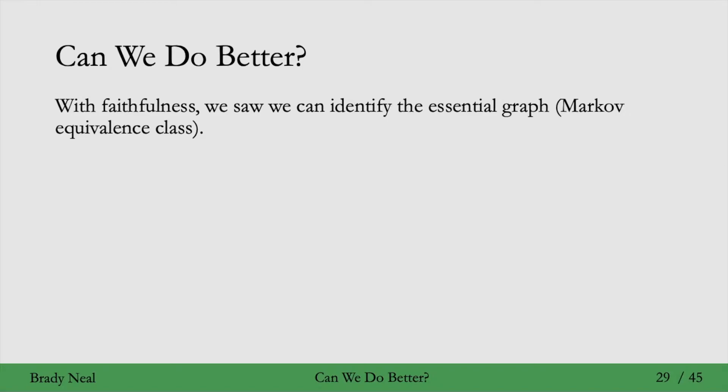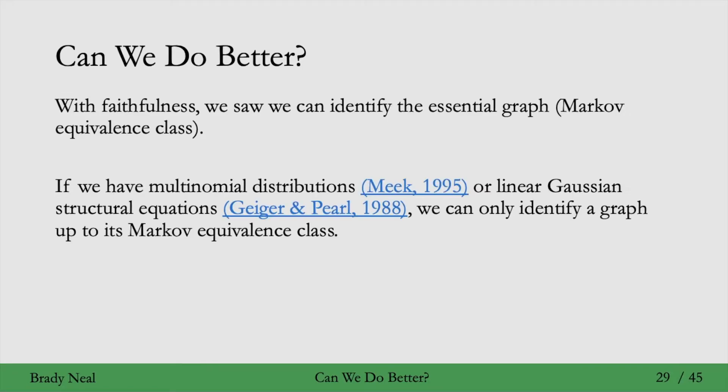For example, if we make more assumptions? Well, in the setting where we have multinomial distributions, or we have linear Gaussian structural equations, this is the best we can do. We can only identify a graph up to its Markov equivalence class. We can't get anything smaller than that.